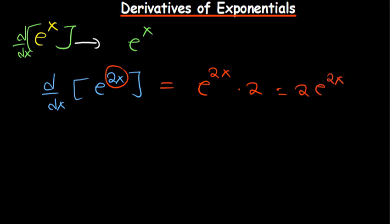Applying the same rule back to the first part: the power of x has a derivative of 1, so multiplying 1 by e to the power x gives us the same result — that's why the derivative of e^x just maintains itself.